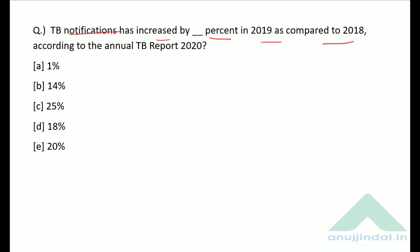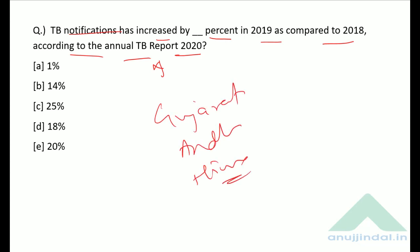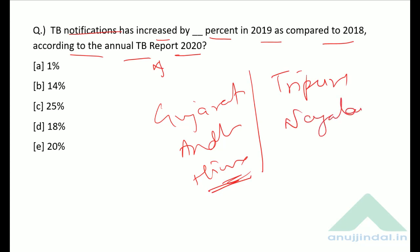TB notifications increased by 14% in 2019 as compared to 2018, according to the Annual TB Report 2020. The best performing states in elimination of TB are: Gujarat at number one, Andhra Pradesh at number two, and Himachal Pradesh at number three among larger states. Among smaller states, Tripura is number one and Nagaland is number two. The correct answer is option B — 14%.